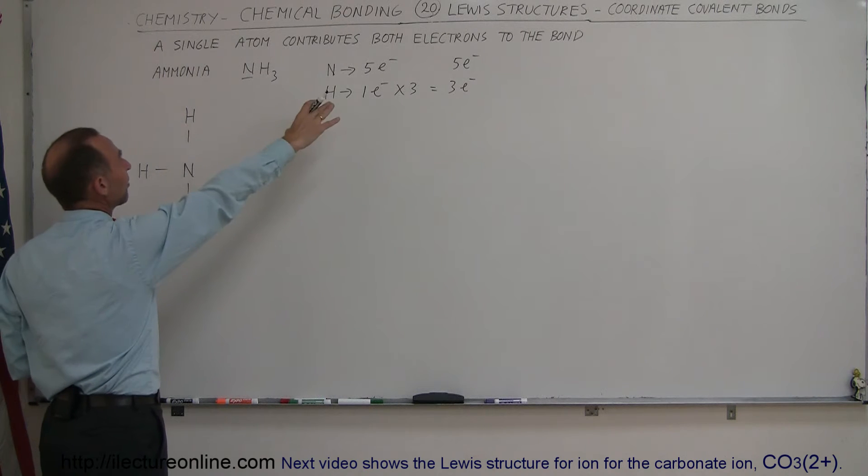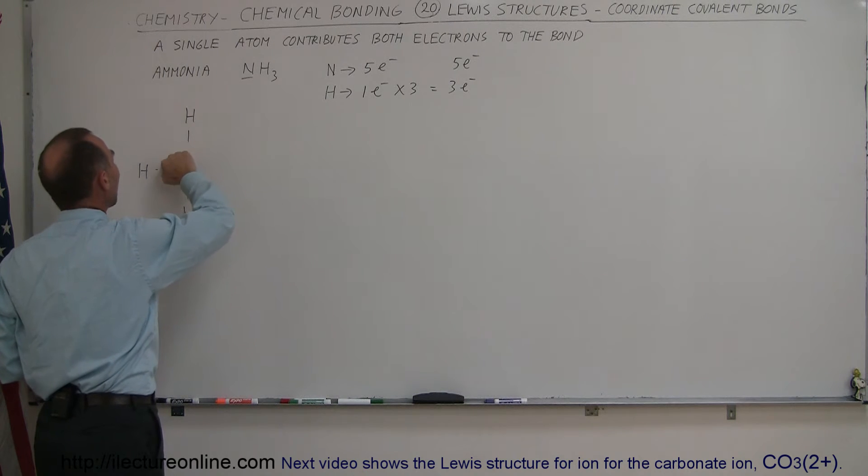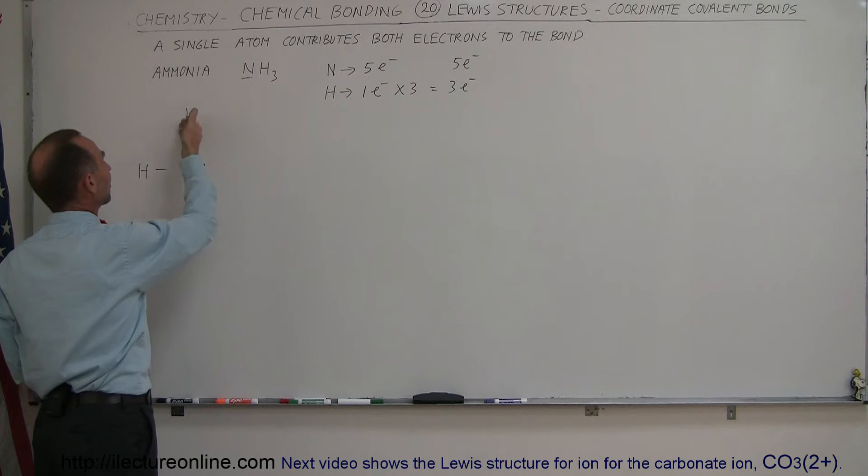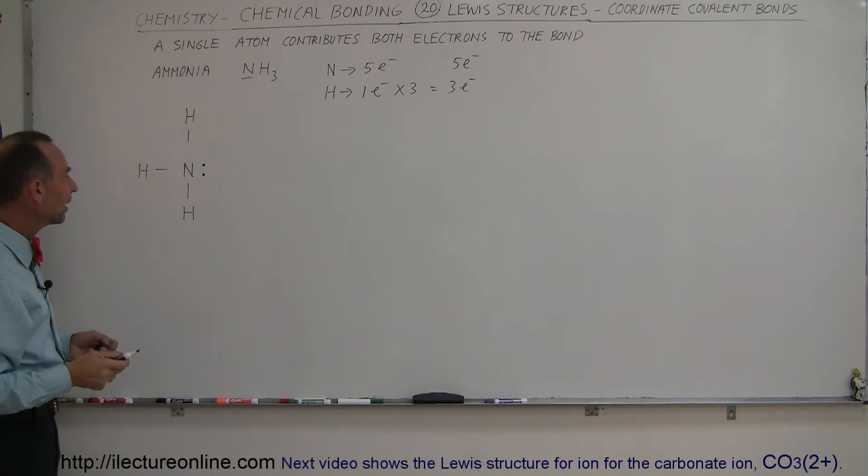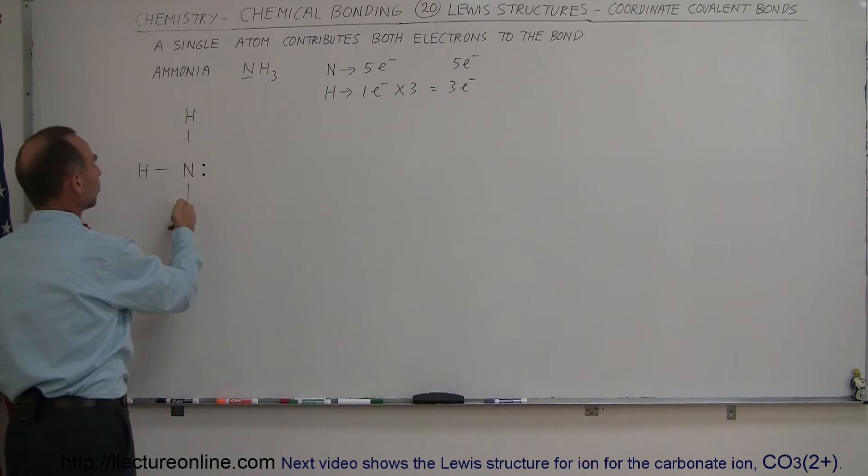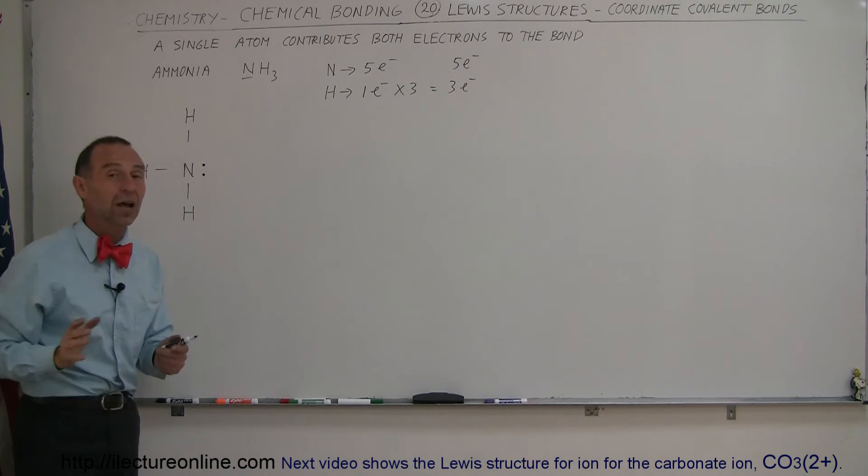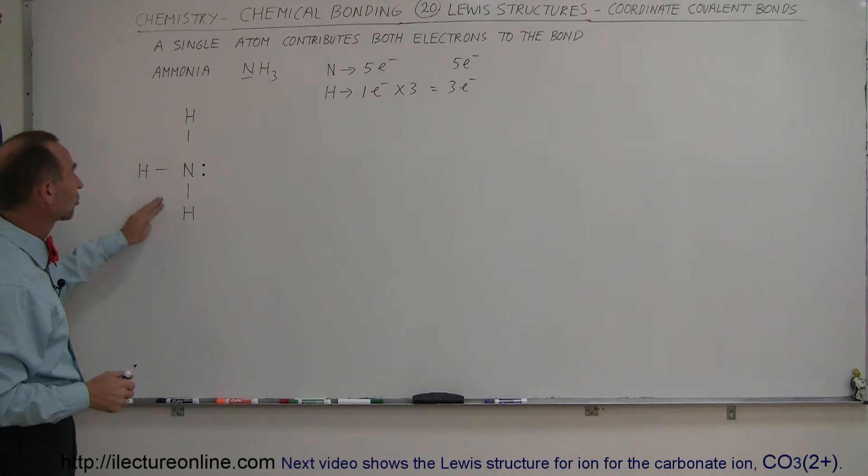Nitrogen started out with five valence electrons. It used three of the five to make the three bonds, so we'll have two more valence electrons like that. So now nitrogen also satisfies the octet rule, because it has two, four, six, eight electrons at least part of the time. We notice that the octet rule is also followed for nitrogen, so this is the Lewis structure for ammonia.